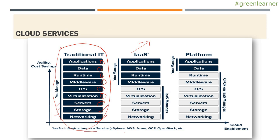If you look at infrastructure as a service — vSphere, AWS, Azure, GCP — these are the different IaaS infrastructure as a service providers where you can buy these services. You can delegate the responsibility of networking, storage, servers, virtualization, and operating system to IaaS managers. You pay them some amount and they will manage it for you.